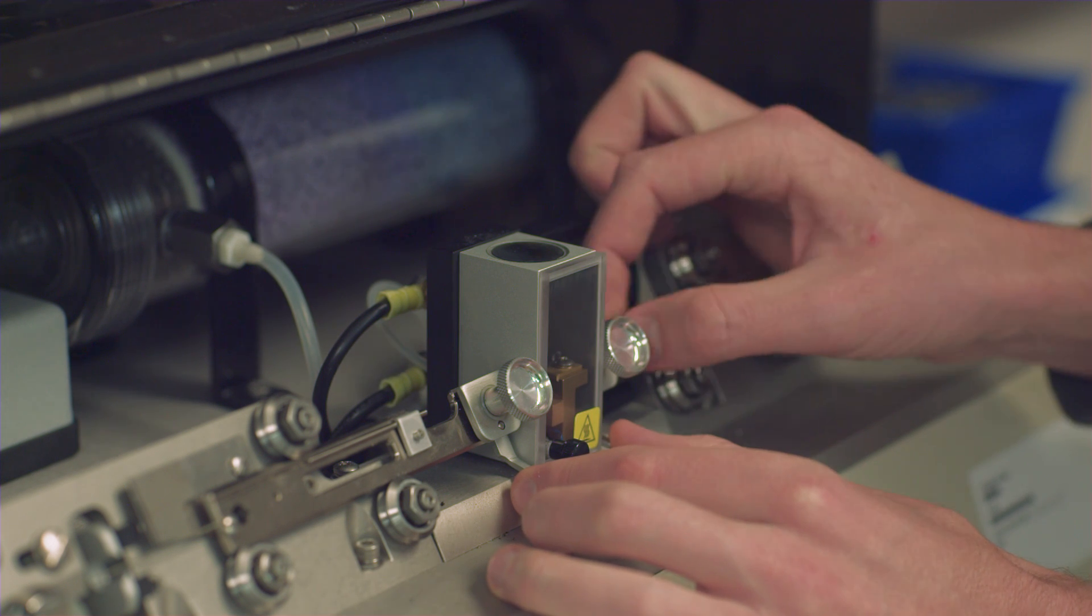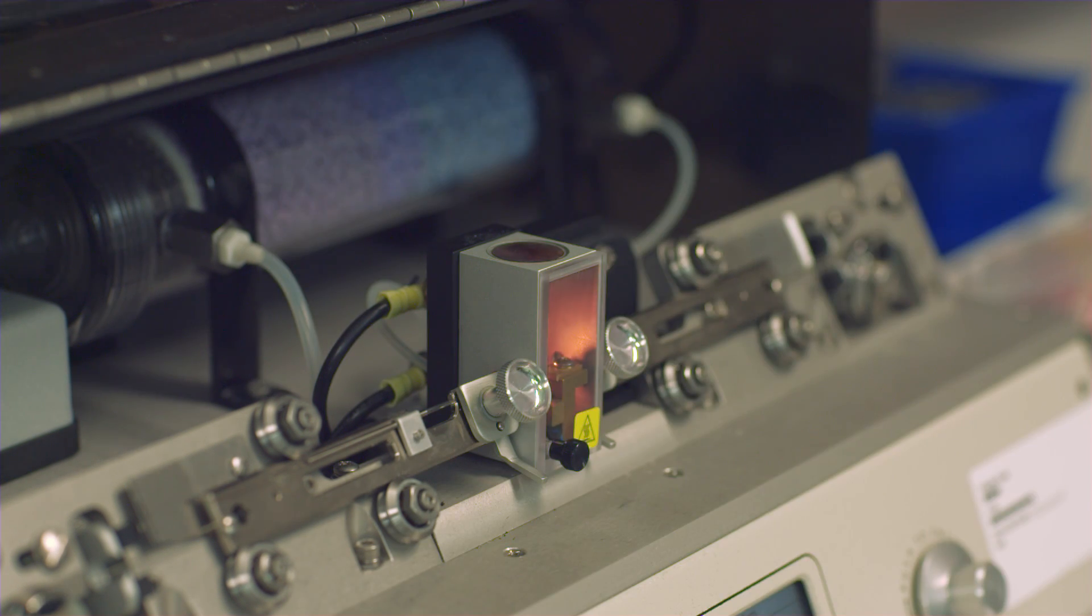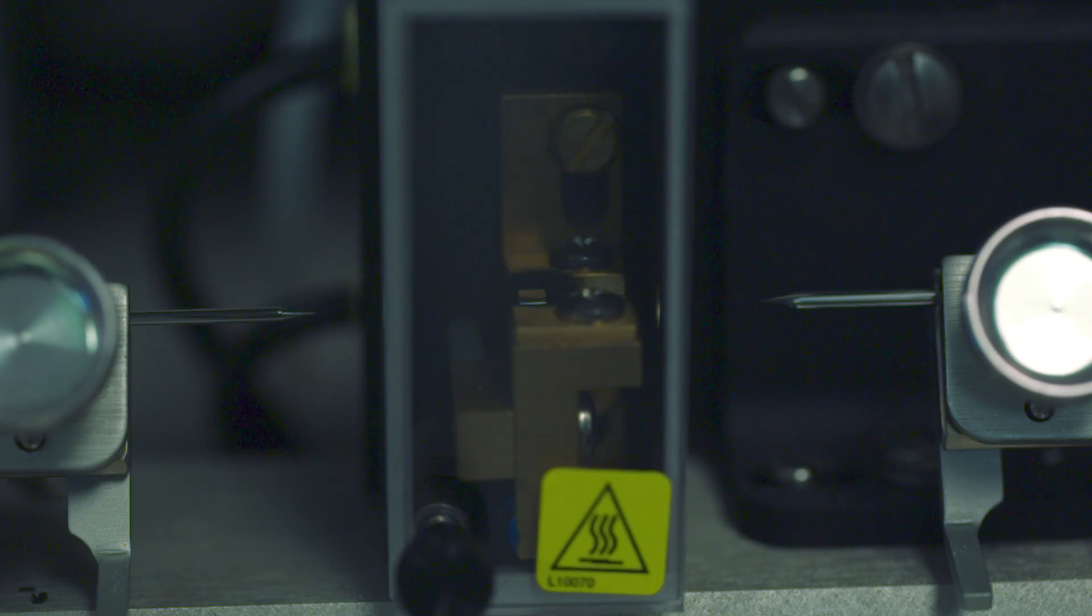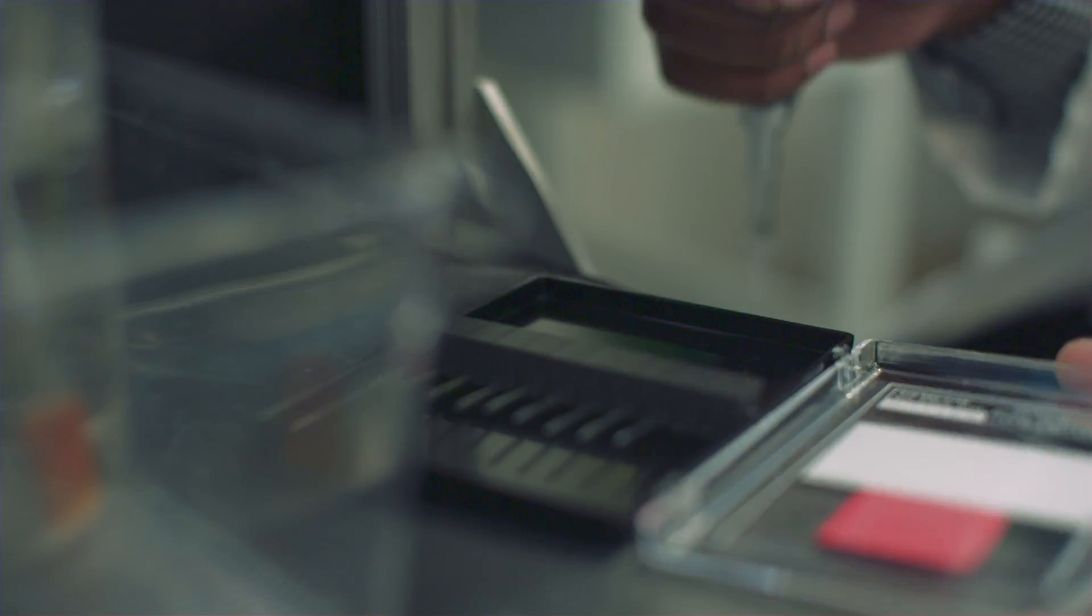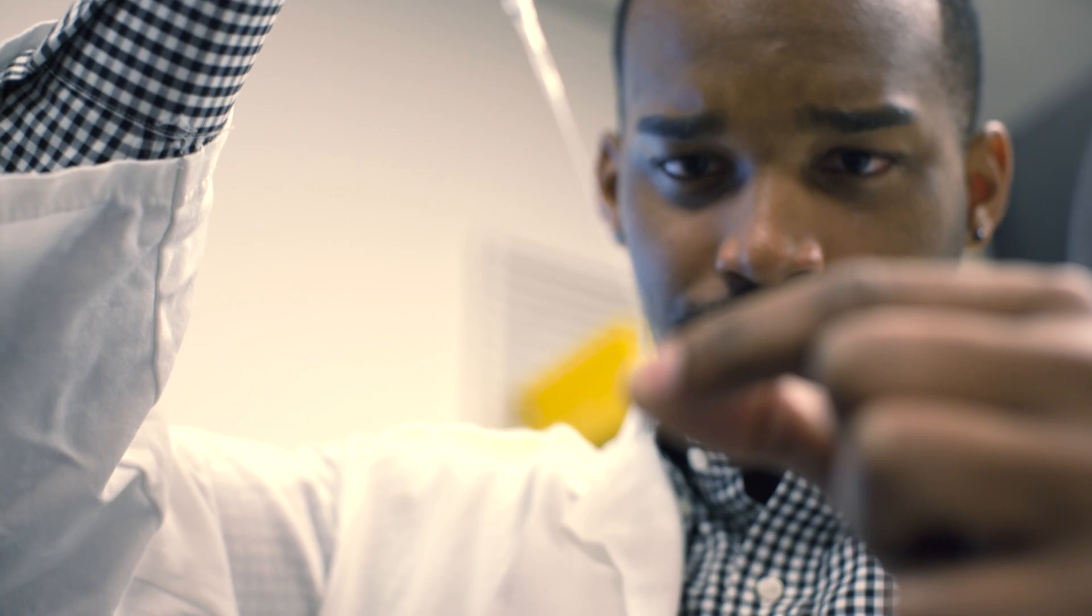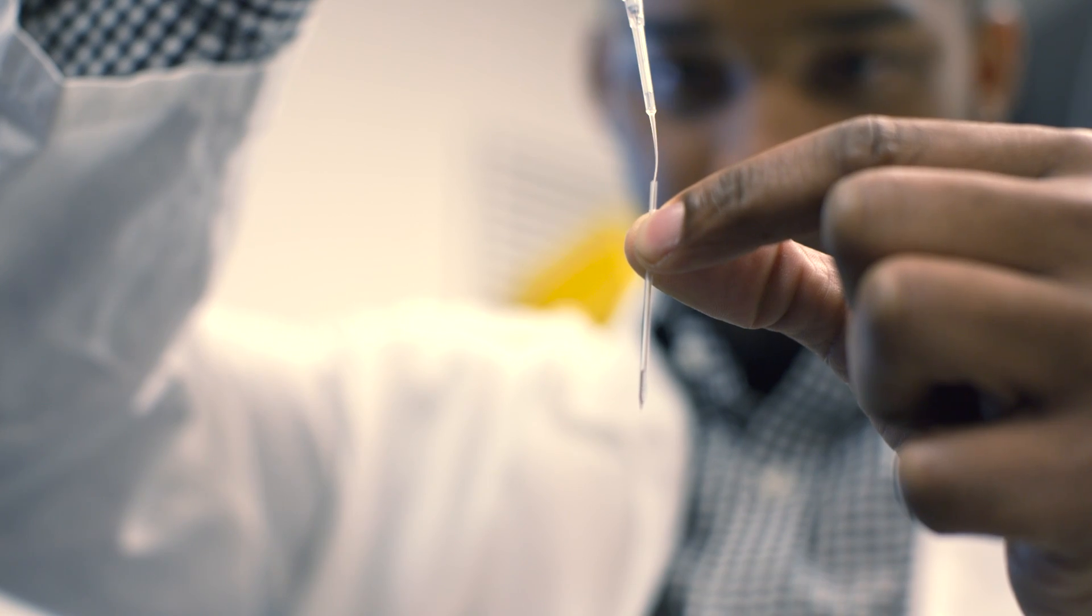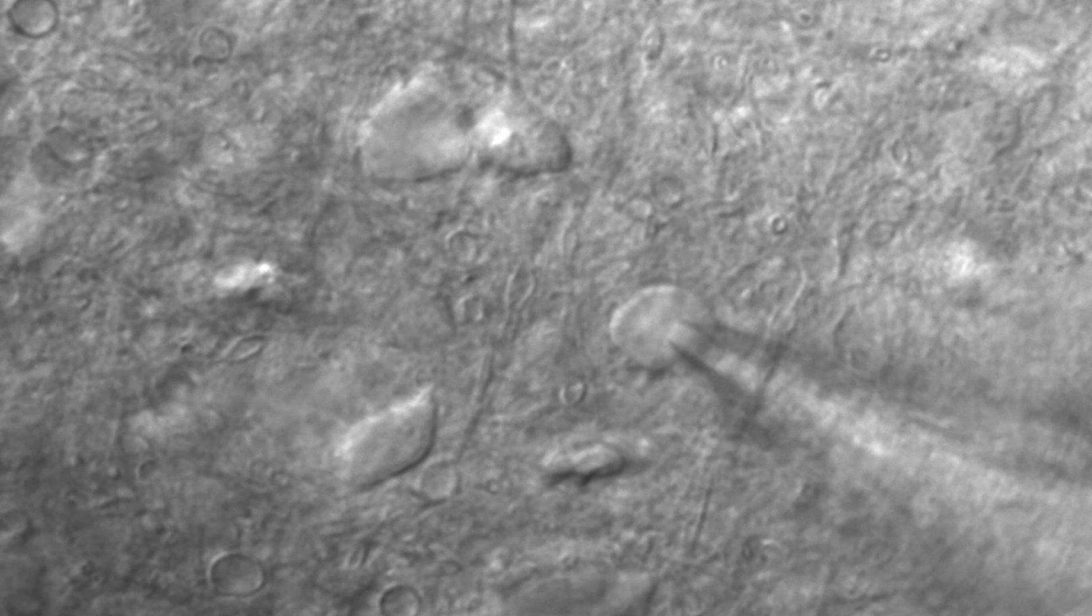Patch clamp electrophysiology makes use of this specialized type of glass that allows us to form a seal on the cell and then open a direct connection where the fluid has access to come from the cell into the pipette and the pipette into the cell. So we can both record signals and deliver signals through this glass electrode.